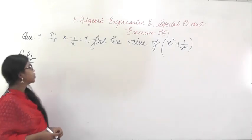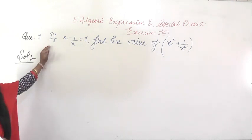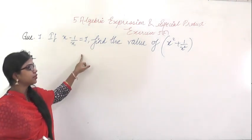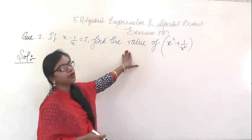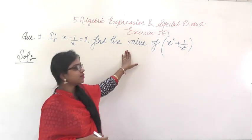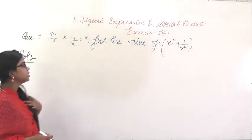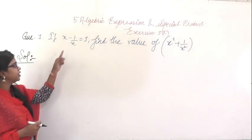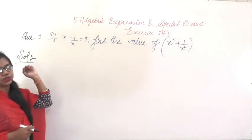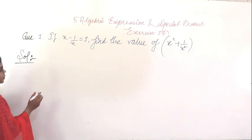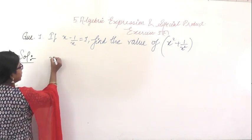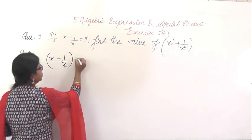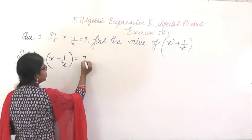This is question number 7. Here in this question it is given: if x - 1/x = 7, find the value of x² + 1/x². It is like the previous question — the only difference here is the minus sign. So the same process we will follow. x - 1/x = 7.